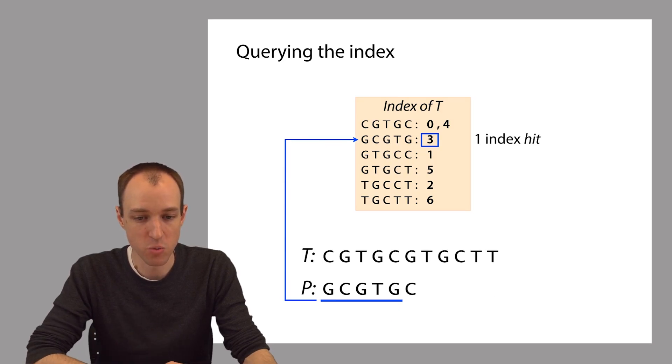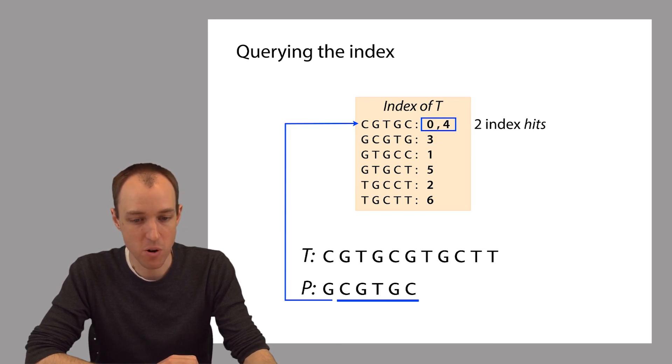One piece of vocabulary which I've already been using is that when we use the index to determine that the 5-mer occurs within P, that's called an index hit. For each offset that the index reports back, that's called an index hit. So when P matches within T, we've been calling that a match or an occurrence. But an index hit may or may not correspond to a match. It's just a hint that we should look harder in that particular region of T. So not all index hits lead to matches.